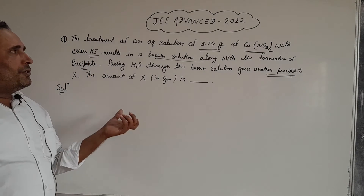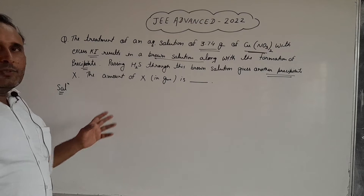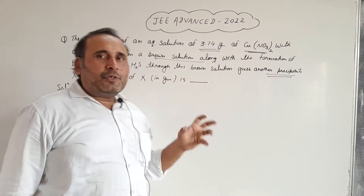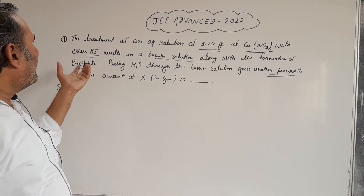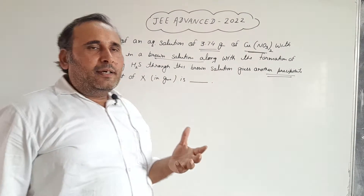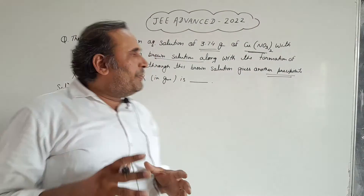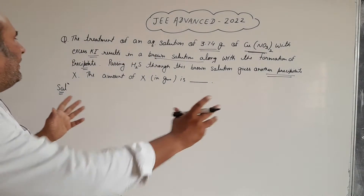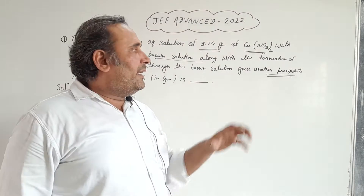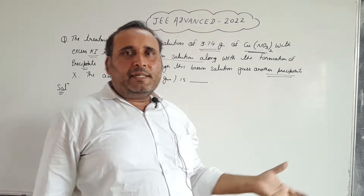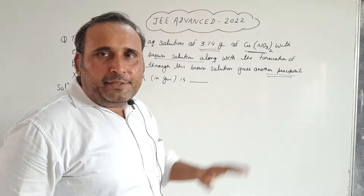Hello students, let's see the question of JEE Advanced 2022. In this question, the treatment of an aqueous solution of 3.74 grams of copper nitrate Cu(NO₃)₂ with excess KI results in a brown solution along with the formation of a precipitate. When we pass H₂S gas through this brown solution, we get another precipitate, and we have to find out the mass of this second precipitate.